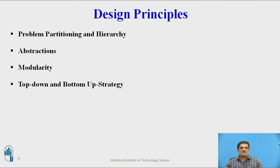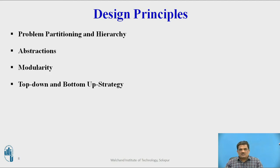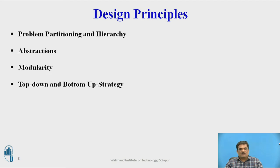The next principle is abstraction. Abstraction is a concept that allows the designer to view the modules in an abstract manner, not in detail. Abstraction can be achieved in terms of functions and data. The first is functional abstraction, which enables the designer to view the module as a function responsible for performing that particular module. In data abstraction, designers focus only on the type of data and its associated operations, irrespective of how that data is being implemented or where it is derived from.